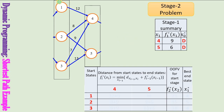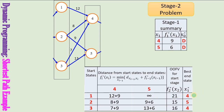Similarly, you can compute all possible objective function values. Note there is no path from node 1 to node 5, so that distance is infinity. Starting from node 1, the best end state is node 4 with an objective function value of 21 units. For node 2, the best end state is node 5 and the value is the minimum of (8+9) or (9+6). The same process is repeated for the last row.